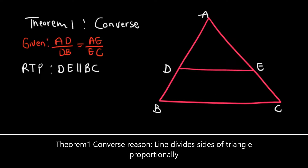This is the converse theorem. The short reason we use is 'line divides sides of triangle proportionally.' The full reason is: if a line divides two sides of a triangle proportionally, then the line is parallel to the third side.